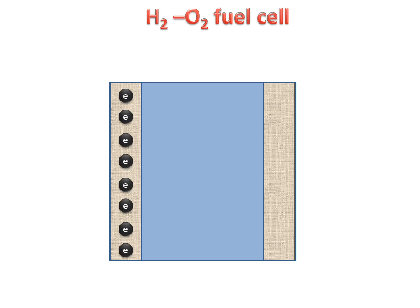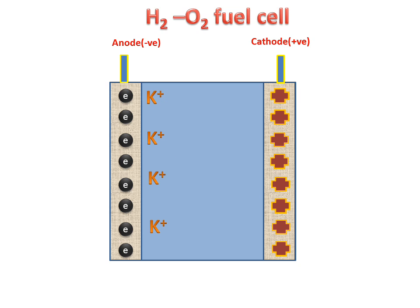We have a fuel cell in which on the left hand side we have electrons and on the right hand side we have positive charges. This is an anode electrode on the left and this is a cathode positive electrode on the right. In between these there is electrolyte which contains K positive and OH negative particles. This is 40% KOH solution.